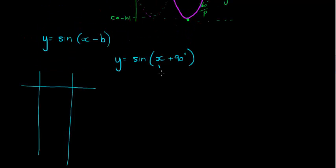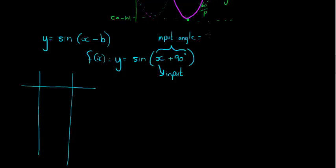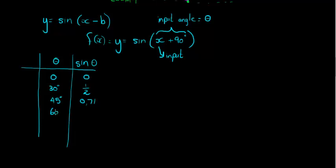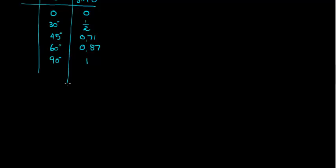We know that when theta = 0, sine of theta = 0; theta = 30° gives sine of 30° = 0.5; theta = 45° gives 0.71; theta = 60° gives 0.87; and theta = 90° takes me to the maximum. Then continuing: 120° gives 0.87, 135° gives 0.71, 150° gives 0.5, and 180° gives 0 again.